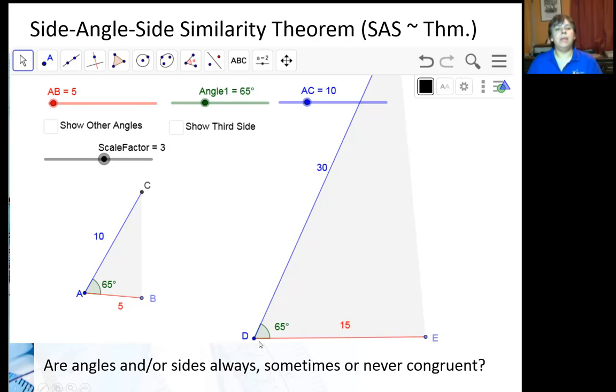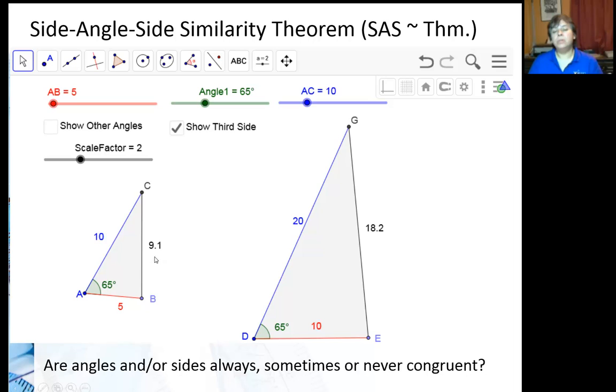And the included angle is still congruent. So the question is, if I do that, do these two triangles have to be similar? Well, let me go ahead and look at the third side here. The third side, you can see, is also proportional.